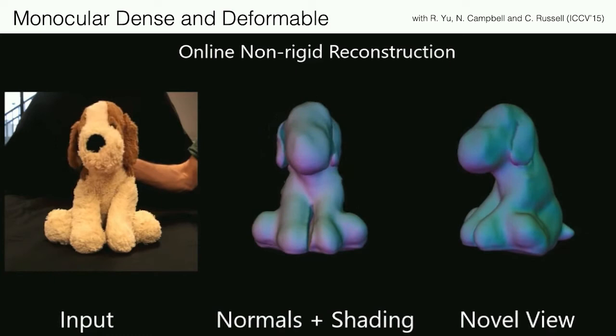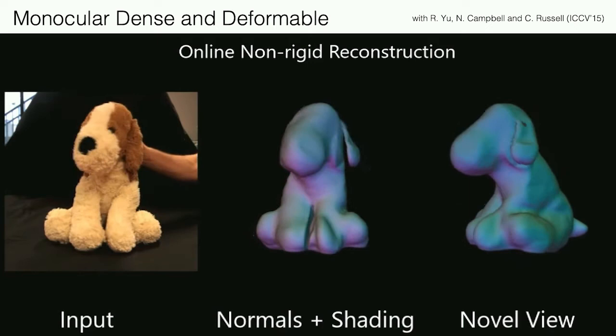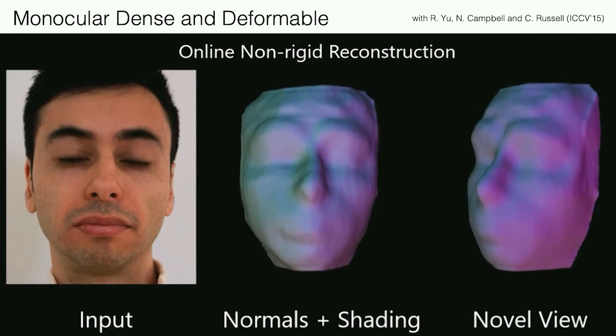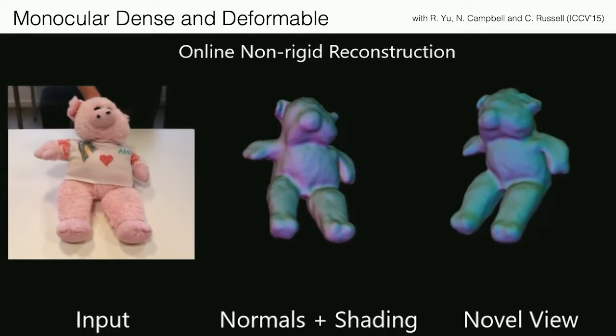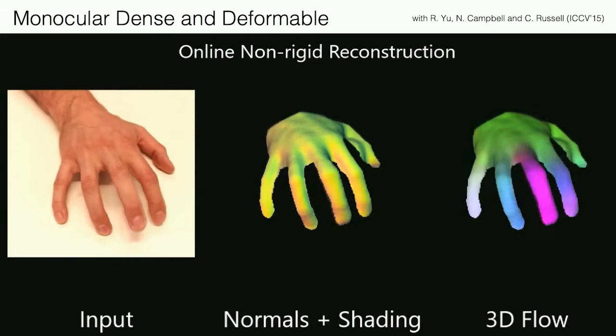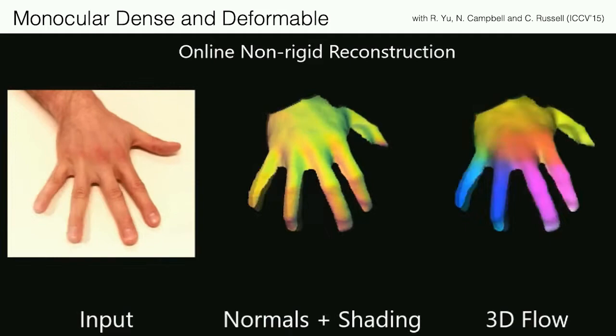Moving on, we have been the pioneers who created the first monocular online non-rigid reconstruction system. This is work we published at ICCV a few years ago, where the input is just a single video. It can be of any object — you can see it here on faces, but we can also use other deformable objects. We have a single video as input and we're producing detailed geometry. So you can see that we can reconstruct a hand, toys, and lots of different non-rigid objects.